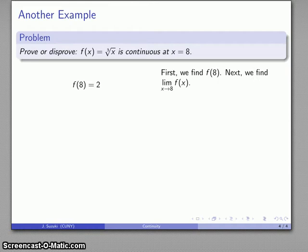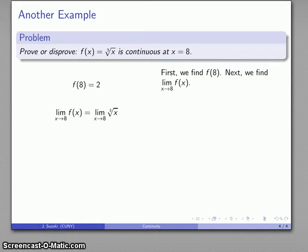The next thing we want to do is we want to find the limit as x approaches 8 of our function. So limit as x approaches 8 of f of x, it's limit as x approaches 8 of the cube root of x, and as x gets close to 8, cube root of x gets close to 2. And so there's my limit value.